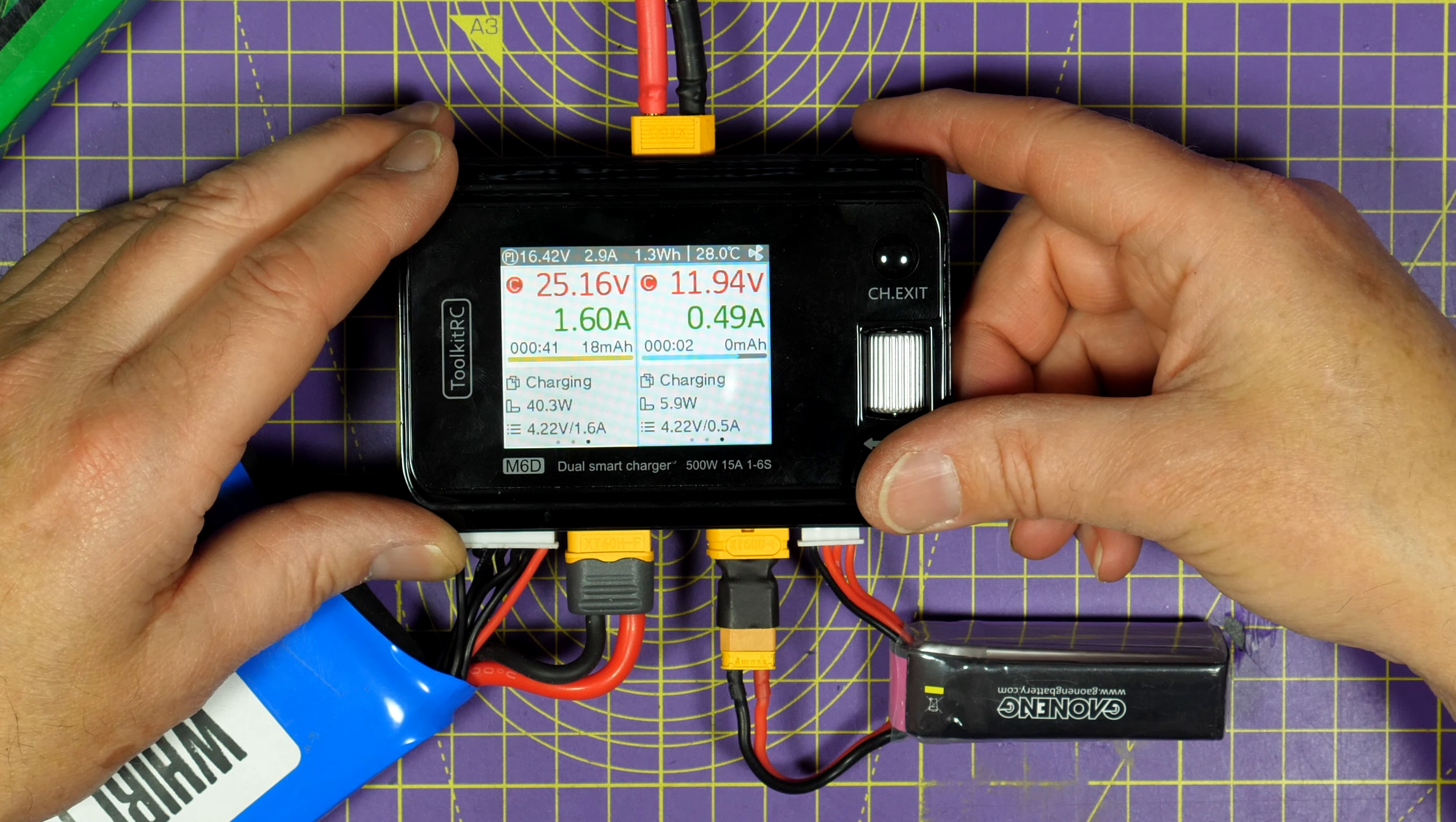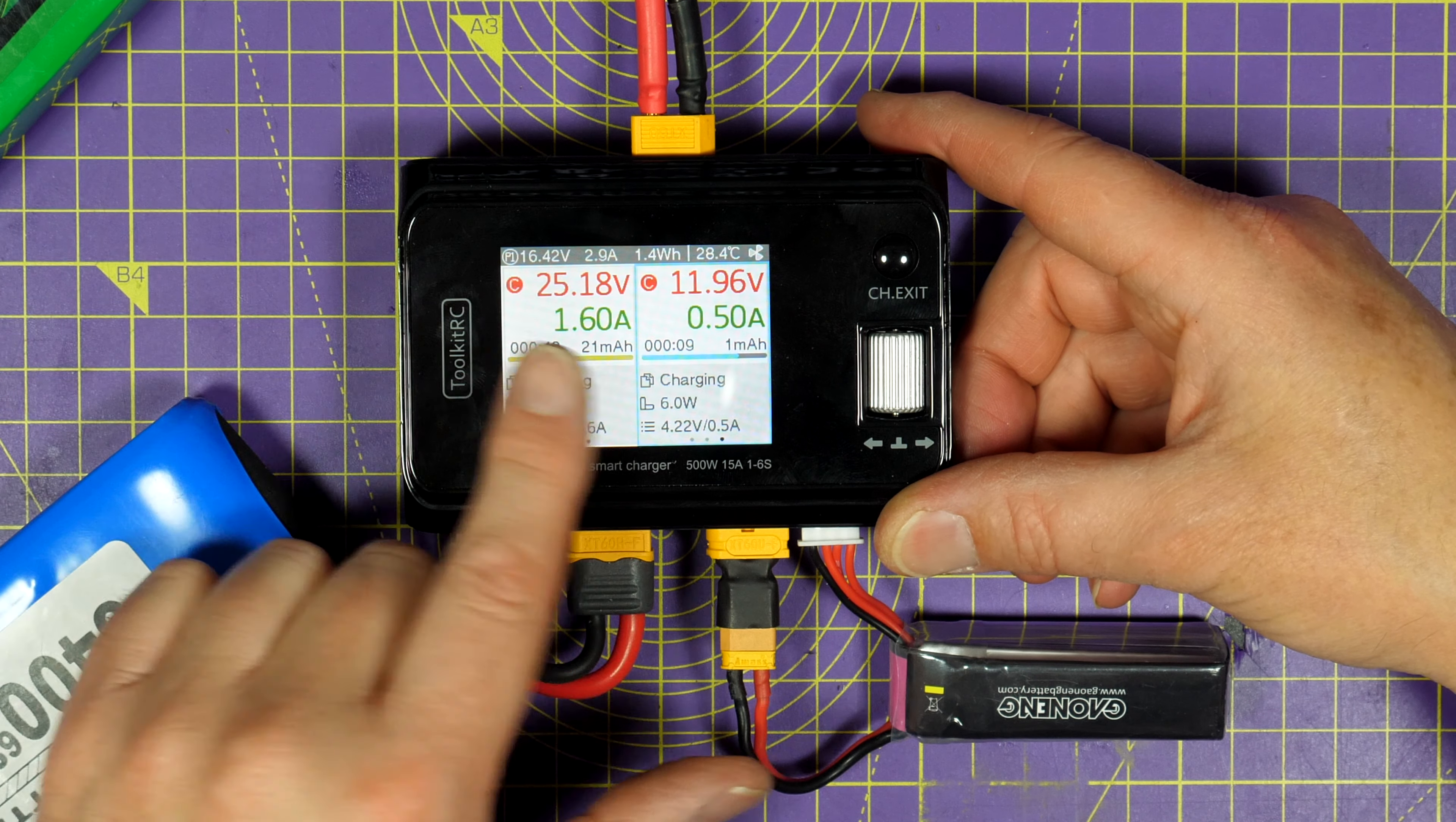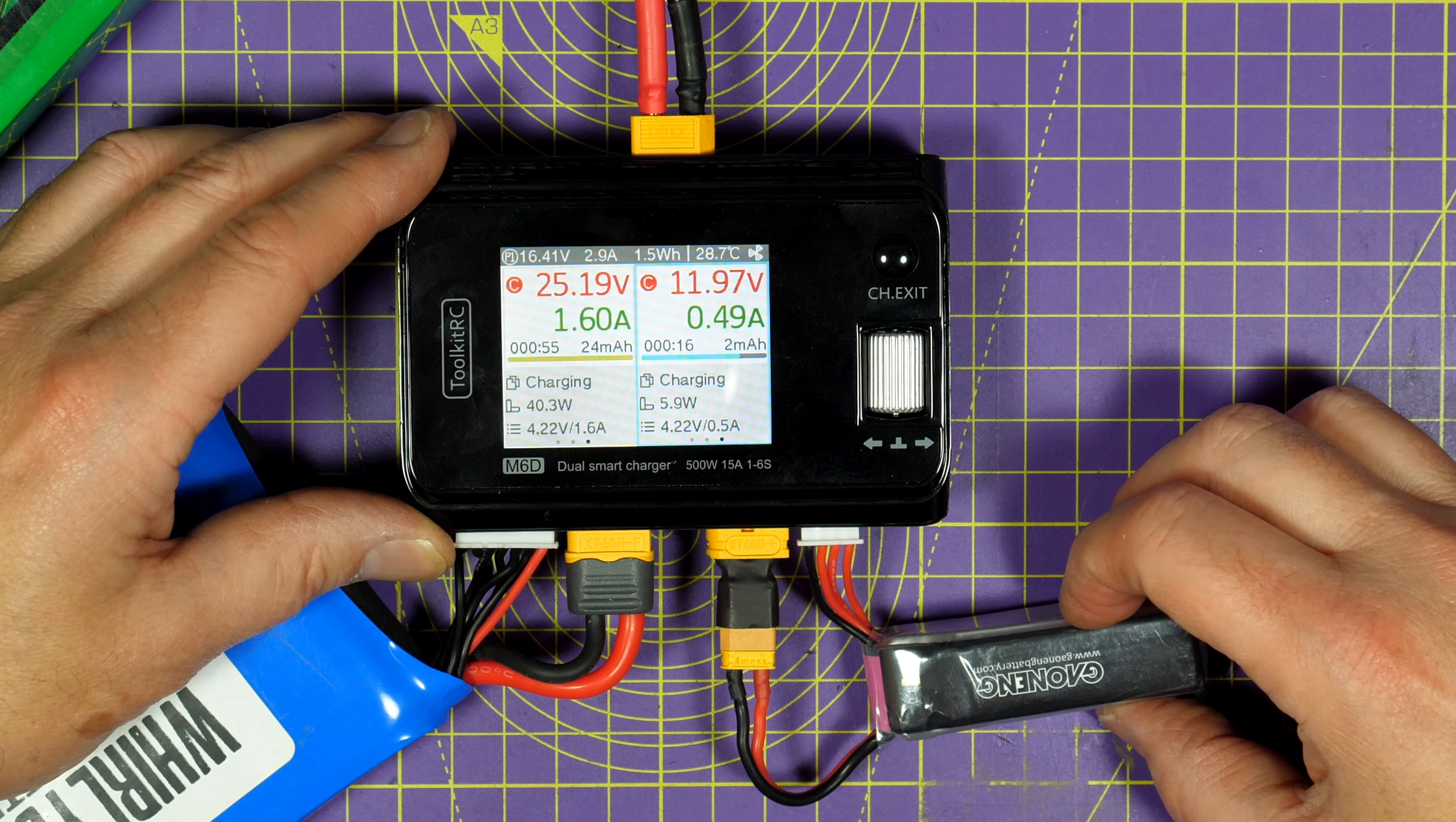So here you can see we are charging a 6S lithium ion cell here, charging away quite nicely and we're charging this 3S LiPo on this channel.